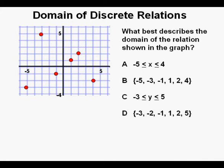Unfortunately, my exit polling showed that they had a very difficult time with a problem very much like this one. What best describes the domain of the relation shown in the graph?